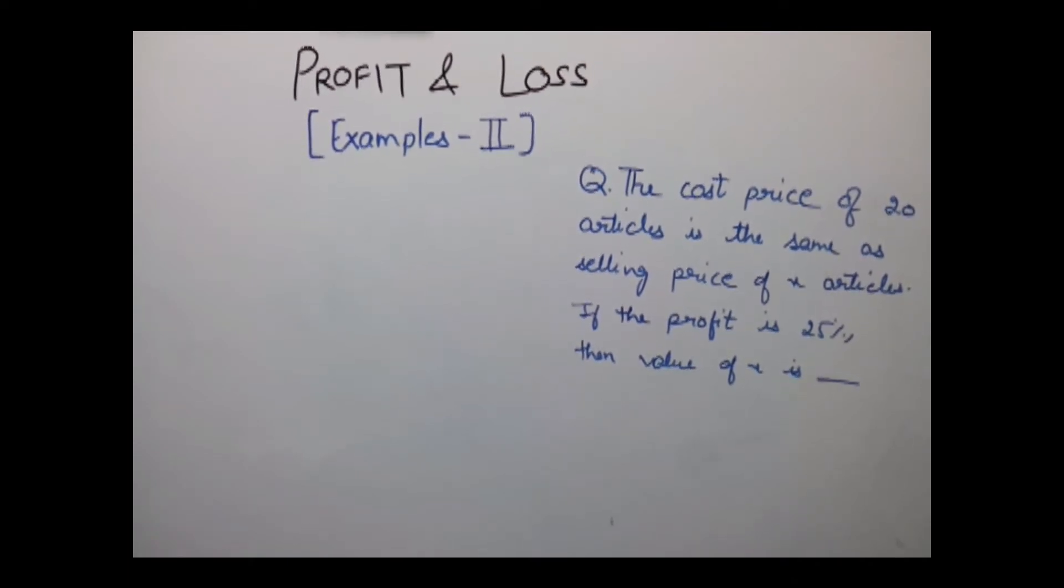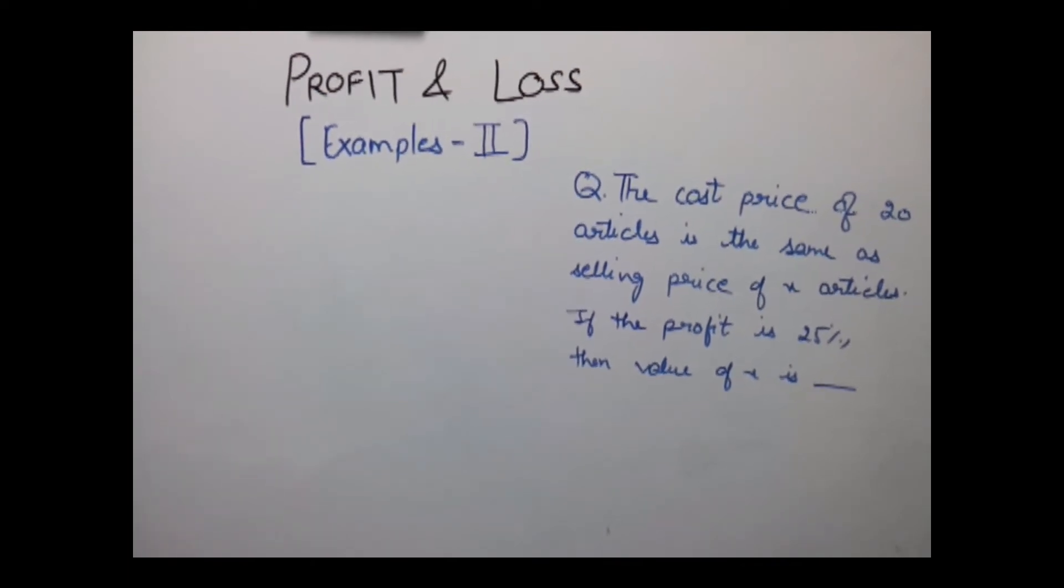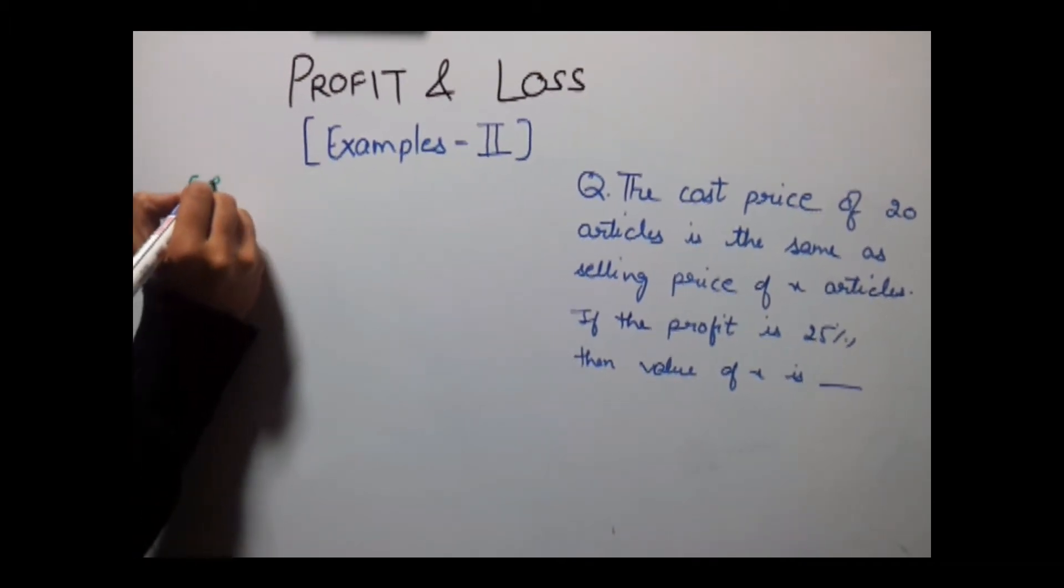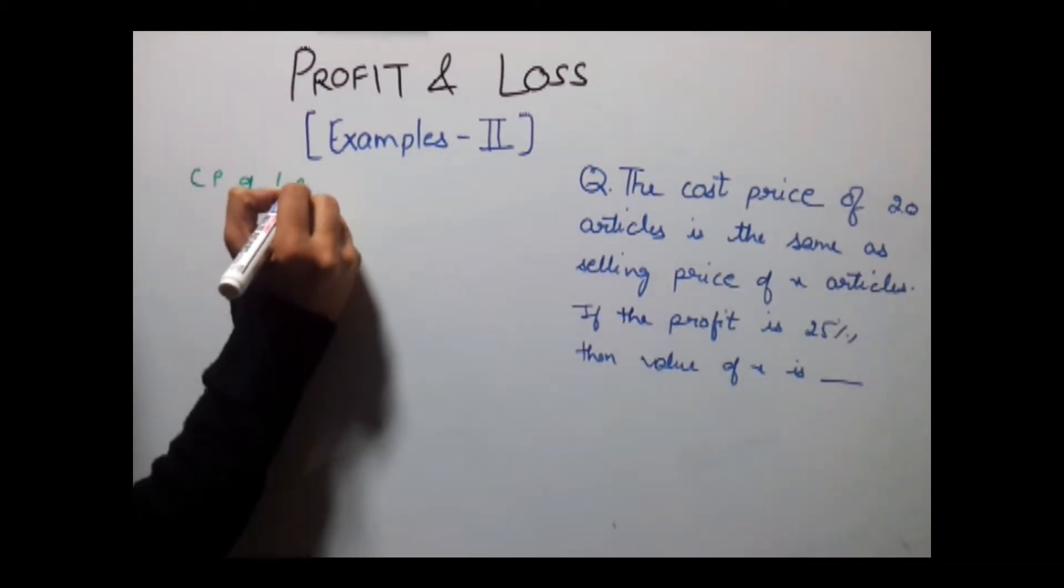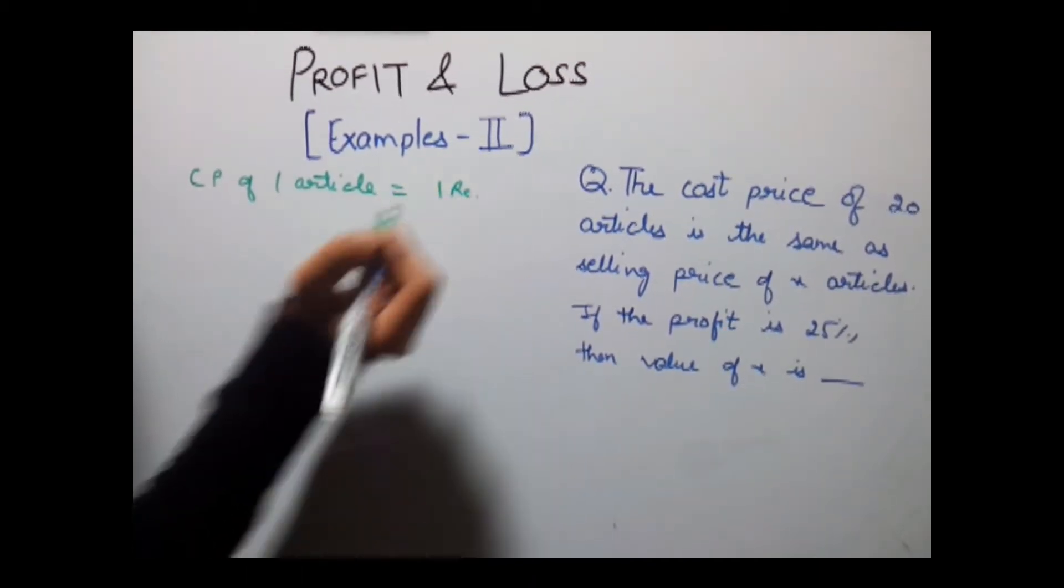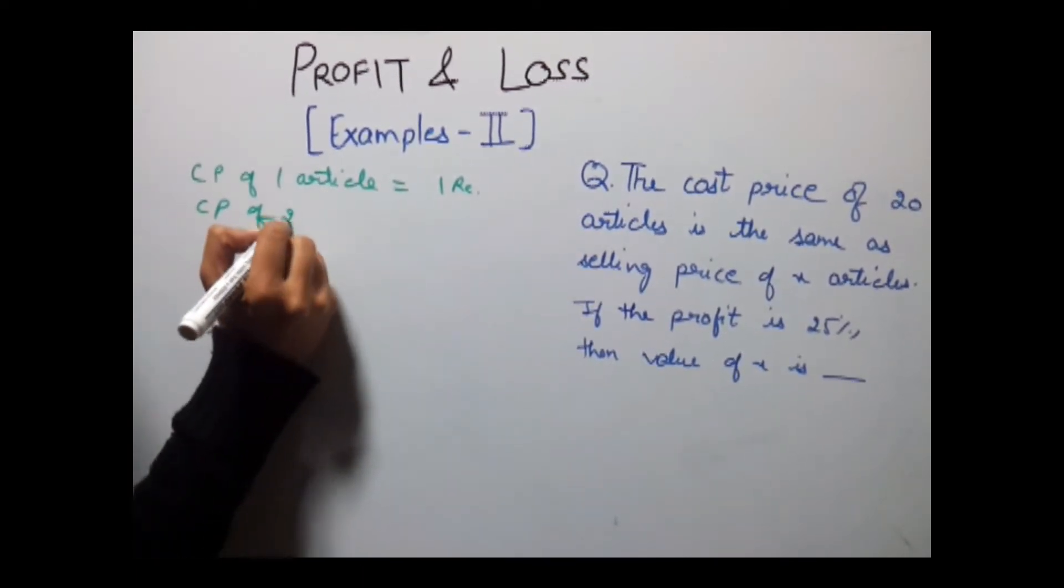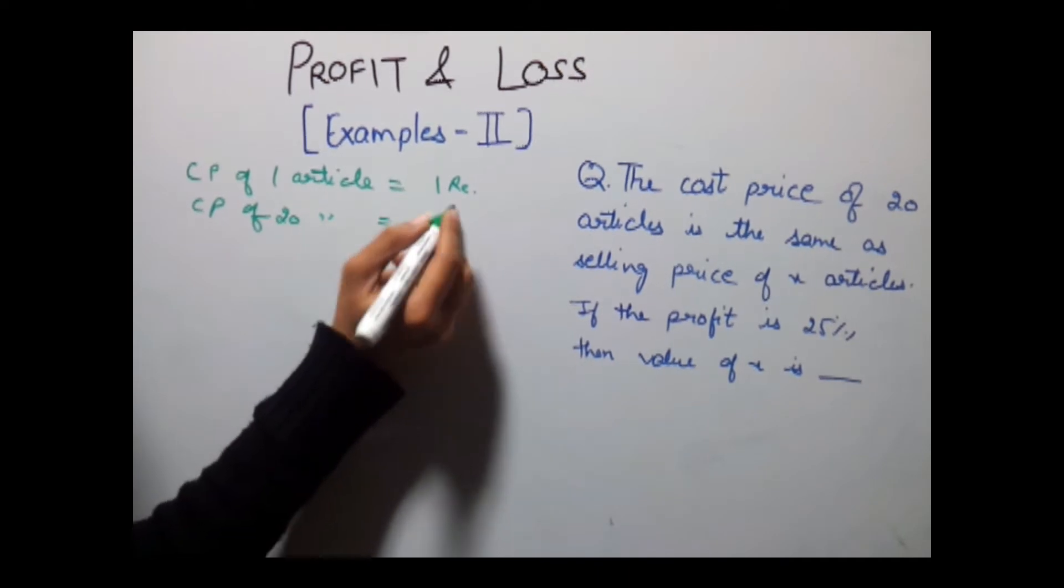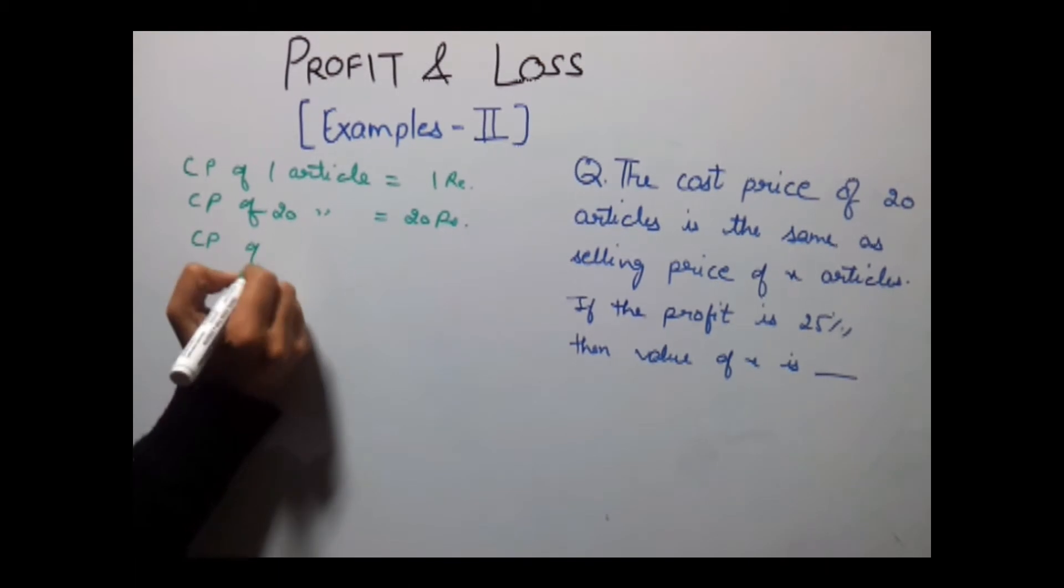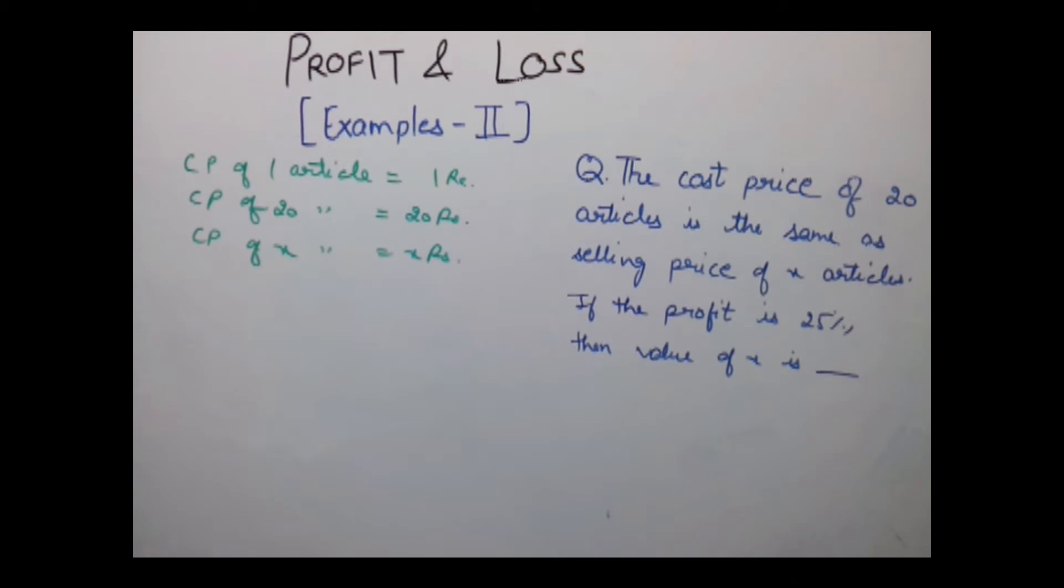As I have discussed earlier, in this type of questions you need to assume something. So let's assume that cost price of a single article is equal to rupee 1. So CP of 1 article is equal to 1 rupee. So CP of 20 articles would be equal to 20 rupees and similarly CP of x articles would be equal to x rupees.